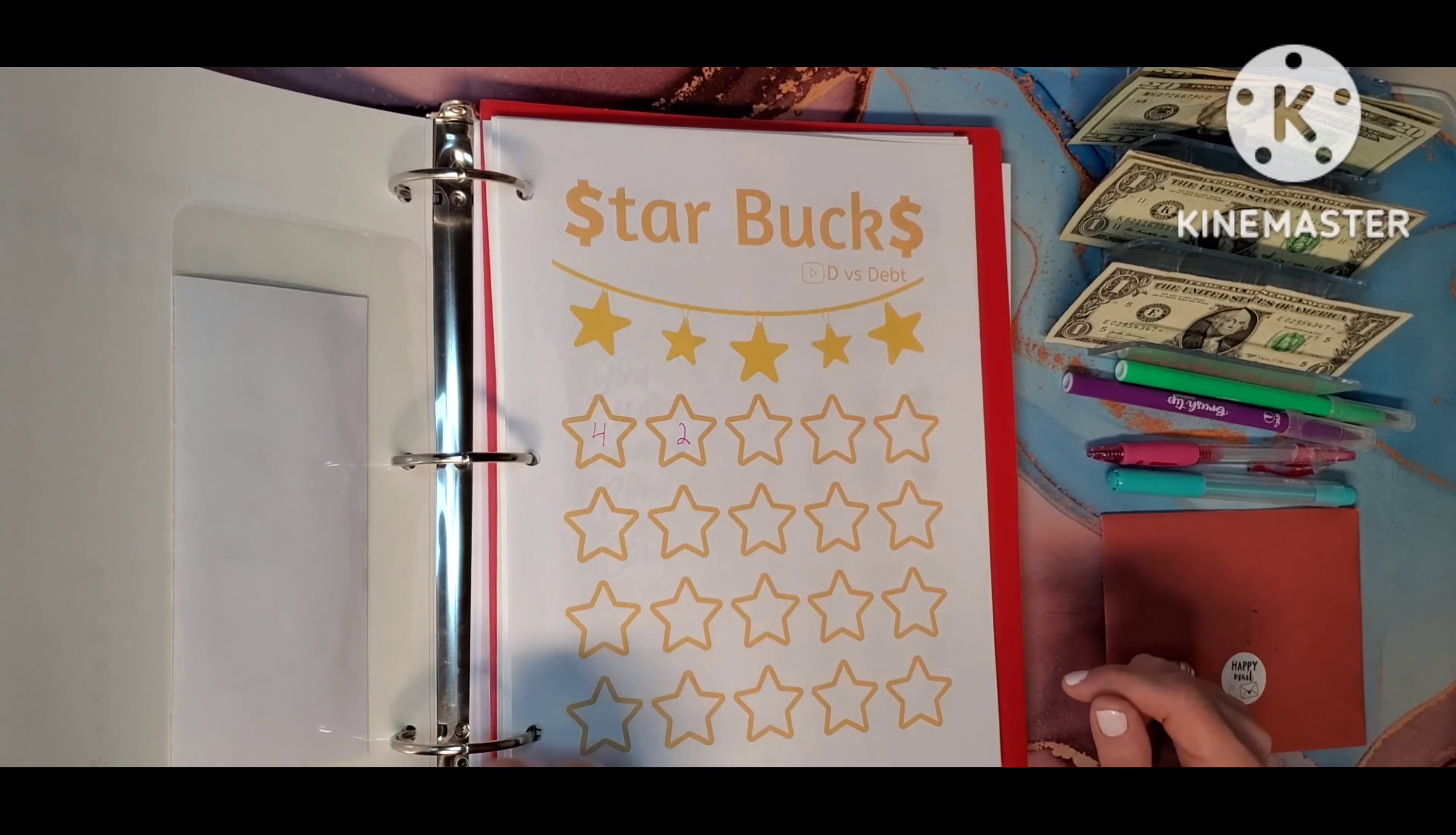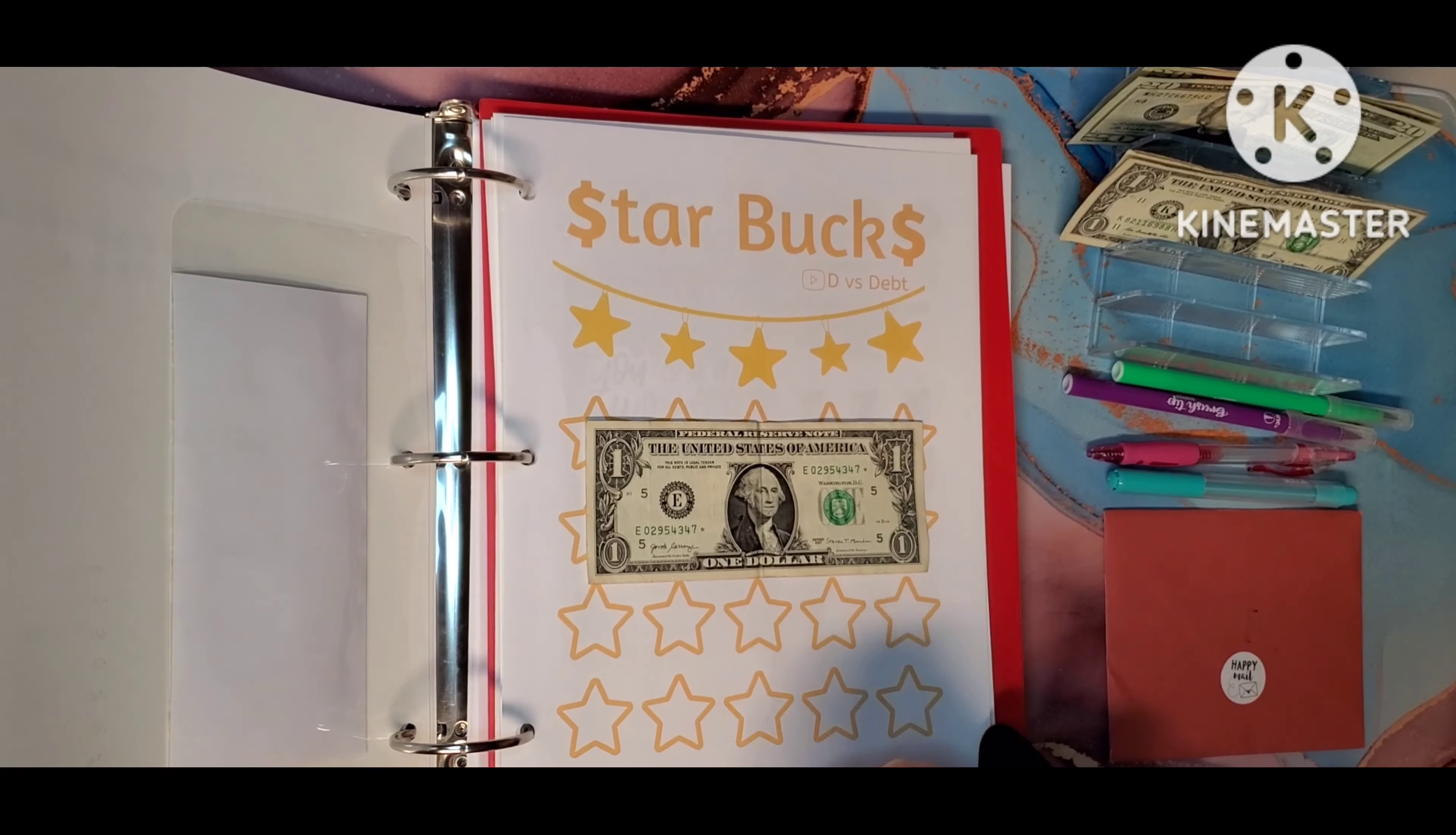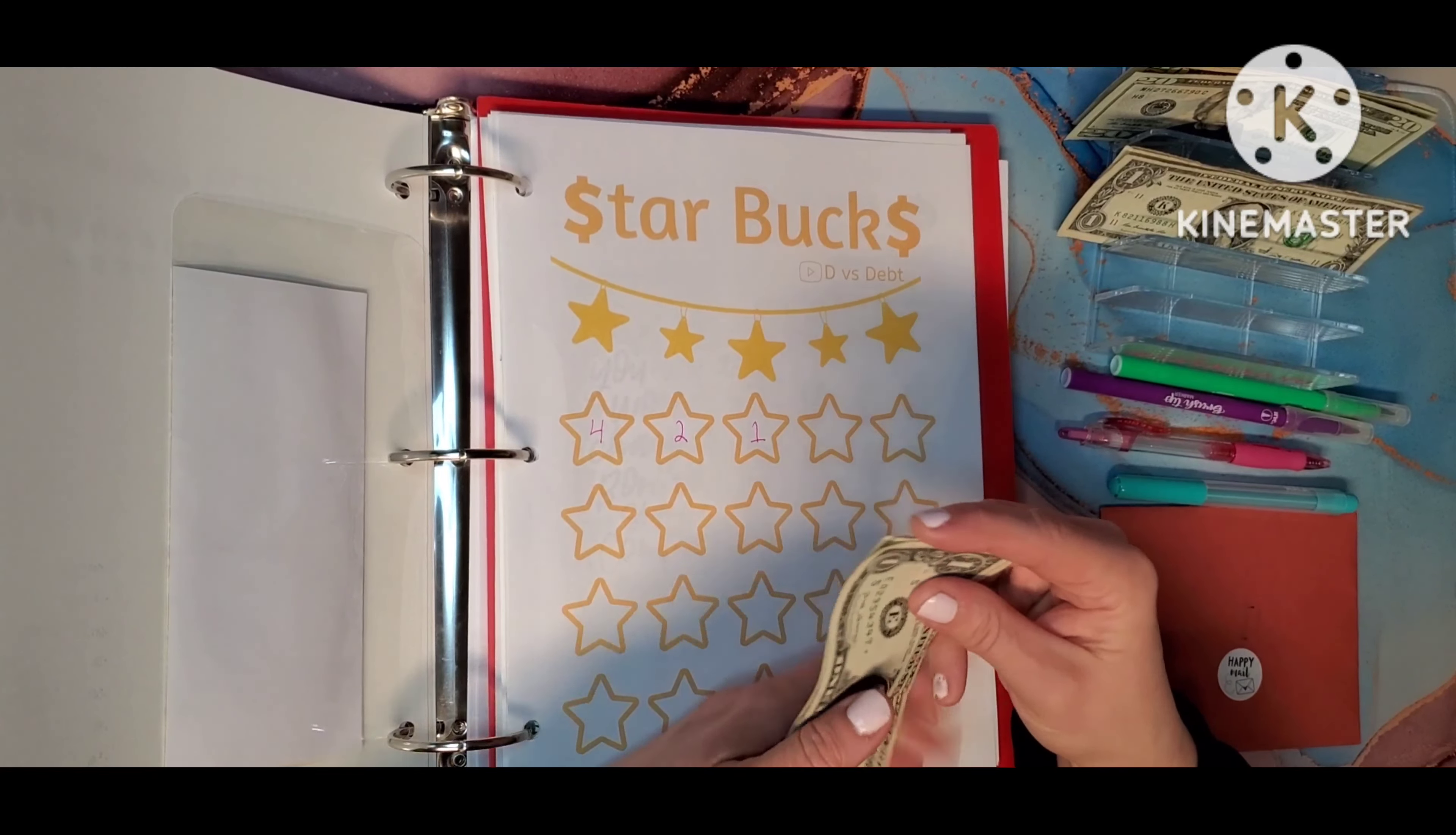This is the star bucks challenge. This challenge is by D versus Debt. And this doesn't mean coffee. What this means is star notes. So on the US dollars at the end of the serial number, if there is a star, this is a reprint of a bill that has been damaged or destroyed. Currently I have found none in the wild, but my husband at work has been able to find a few. So that is pretty fun. He thinks it's funny to bring me home bills and then I get to put them away and can't spend them.